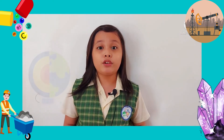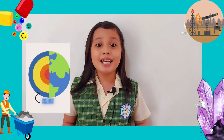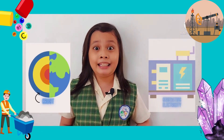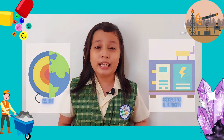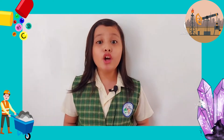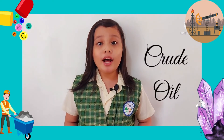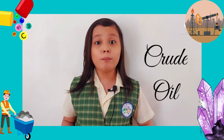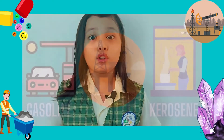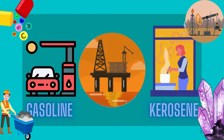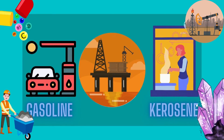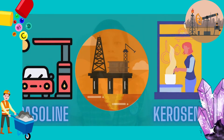Natural gas comes from the earth's crust and is used for heating and generating electricity. Crude oil, also known as petroleum, is a mixture of hydrocarbons that exists in liquid phase in natural underground reservoirs, like gasoline to run engines and kerosene that is used for cooking.